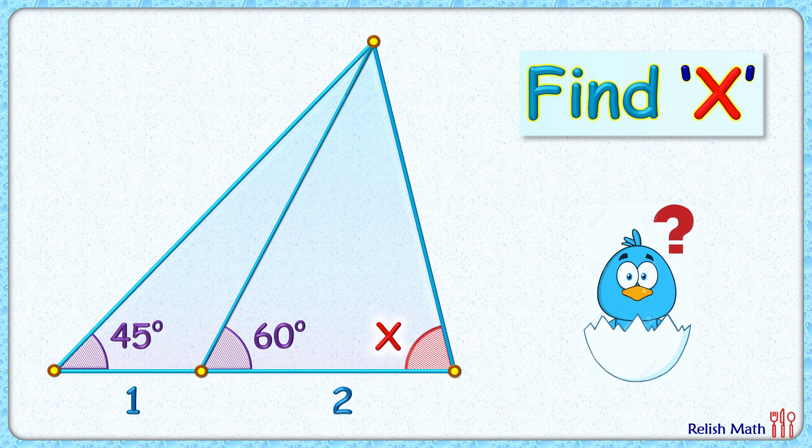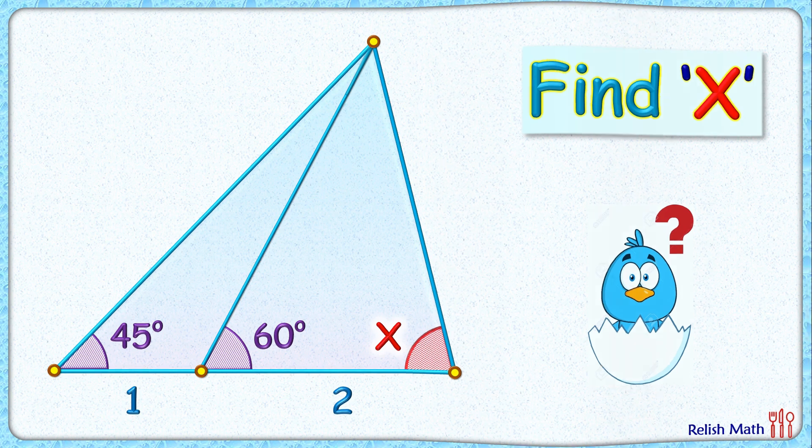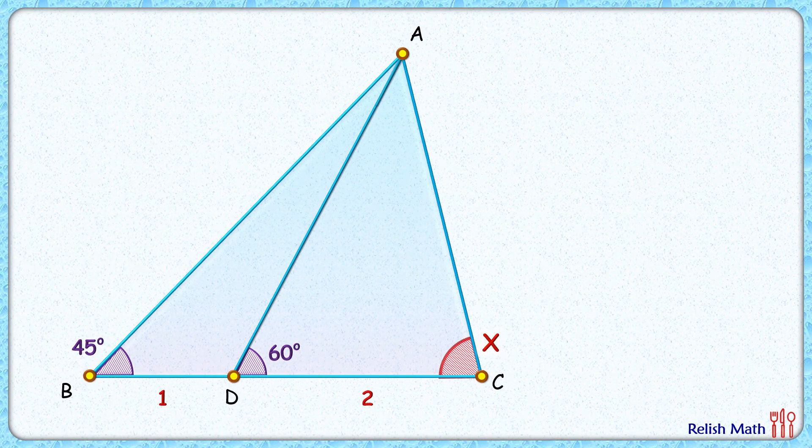Welcome everyone to this interesting question: can you find the value of angle x here where these two angles are given as 45 and 60 degrees, and the base length of this triangle is given as 1 plus 2 centimeters? Let's check this interesting solution.